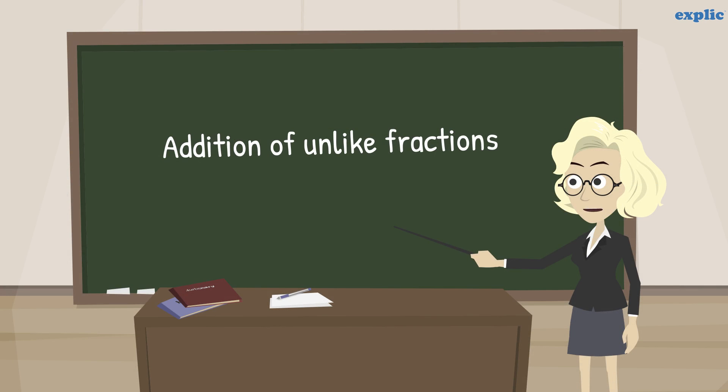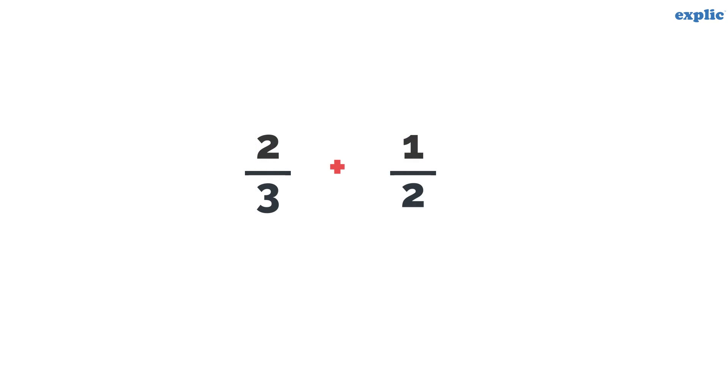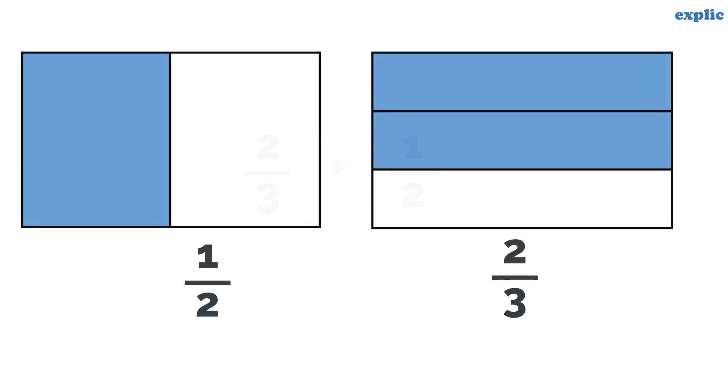As we know, unlike fractions are fractions where denominators are different. Let's add 2 by 3 and 1 by 2 graphically. First, make the denominator the same by dividing the images into equal parts.